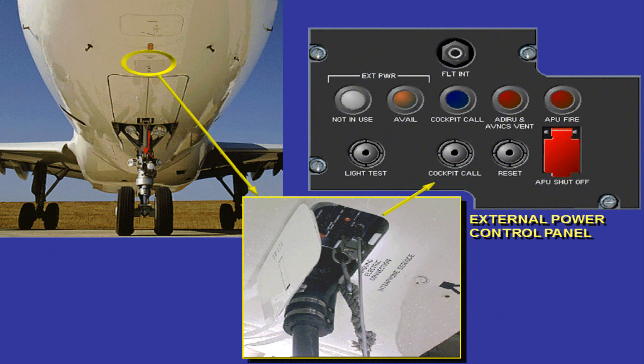The ground power control panel, GPCP, and the external power receptacle are located in front of the nose landing gear. On this panel, two lights indicate the ground power unit availability — avail light — and connection to the aircraft network — not in use light. The ground power unit should provide 400 Hz, 3-phase, 115 volts AC, rated at 90 kVA minimum.